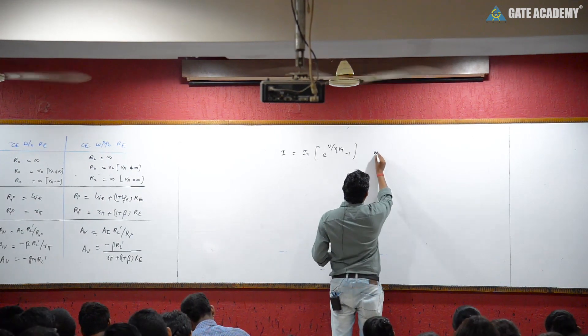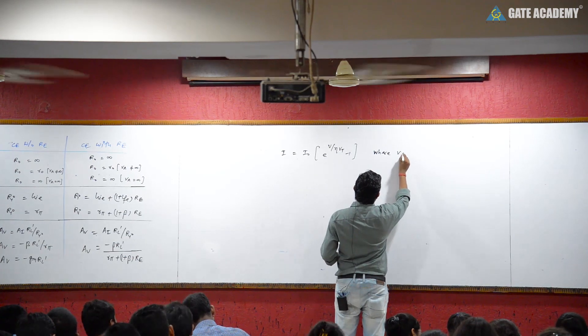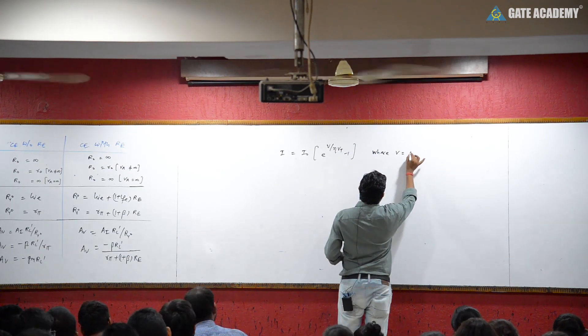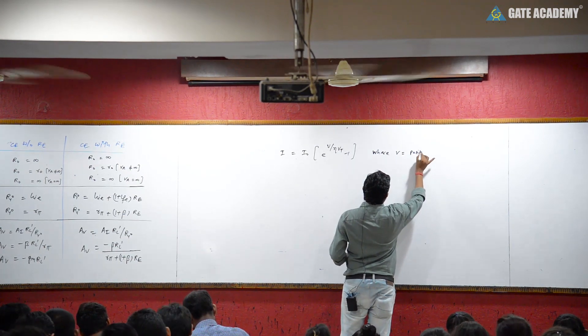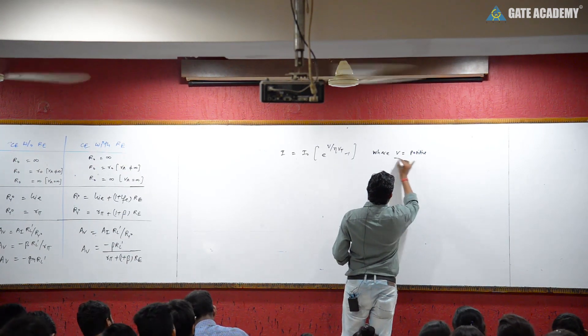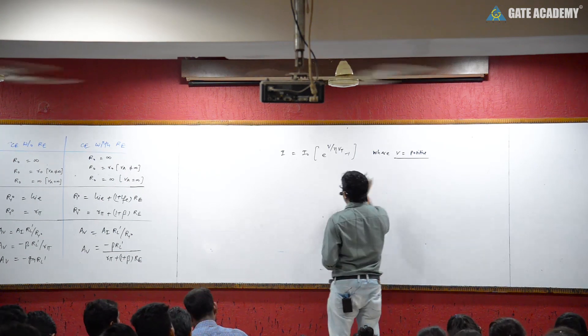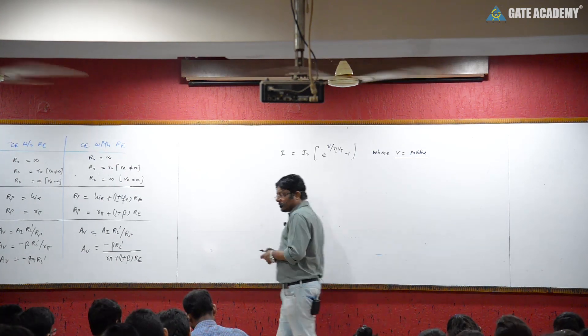Here, V is equal to positive, meaning forward bias voltage. We can see the cut-in voltage, but V is positive in the forward bias condition.